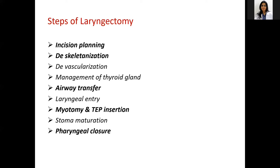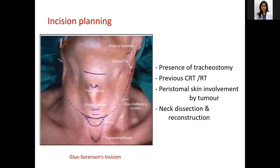For incision planning, the traditional incision for laryngectomy is the Gluck-Sorensen incision, but factors such as prior tracheostomy, previous chemoradiation affecting skin quality, peristomal skin tumor involvement, and planned neck dissection or reconstruction must be considered. The landmarks for the traditional incision are the hyoid bone, thyroid notch, cricoid cartilage, and suprasternal notch. The incision starts from the mastoid tip, curves along the sternocleidomastoid muscle, and meets its counterpart in the midline just below the cricoid cartilage.